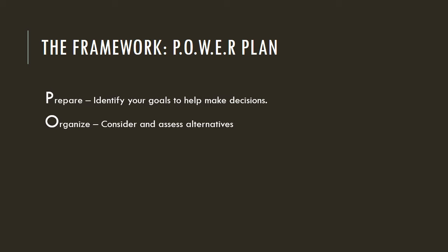Once you've assessed all the alternatives and their outcomes, you need to actually work and make a decision. The reason that important decisions are difficult is that the alternatives carry both benefits as well as costs. Choosing one alternative means you have to accept the costs of that choice and give up the benefits from the others. That can be pretty hard.